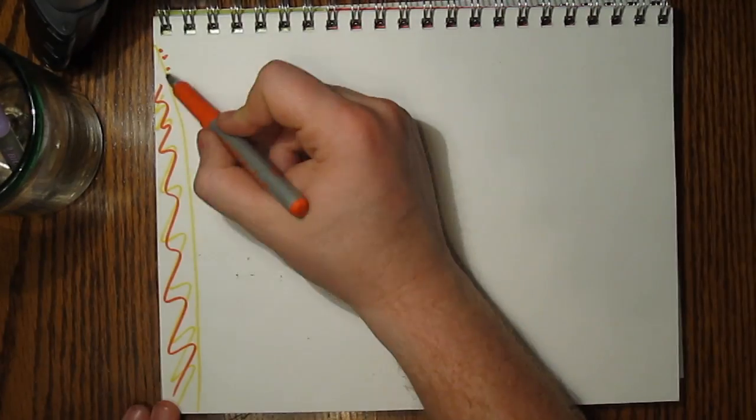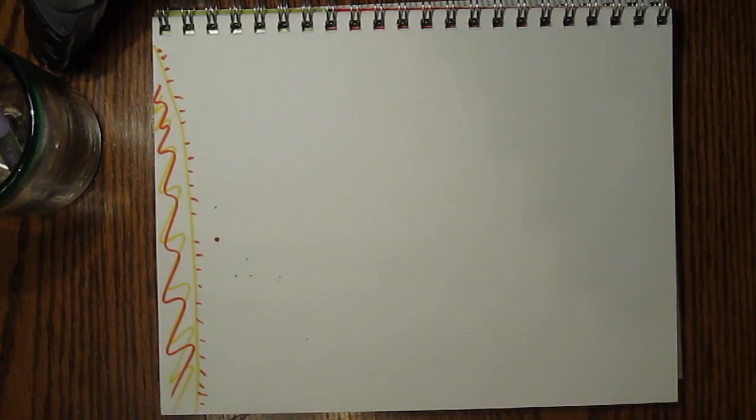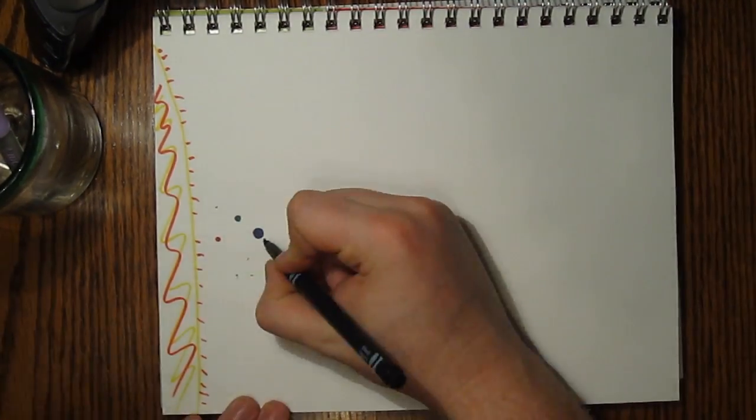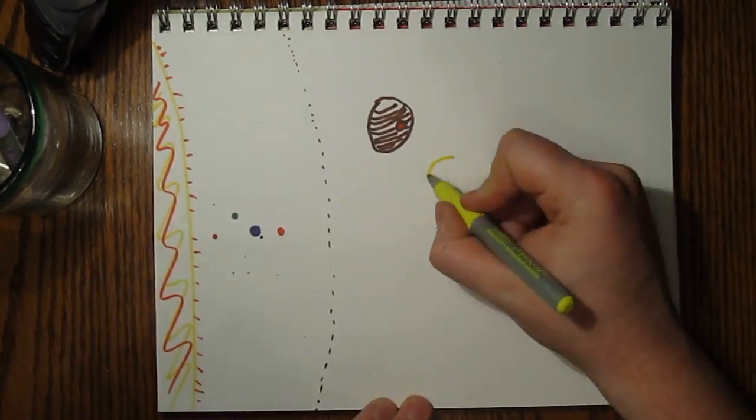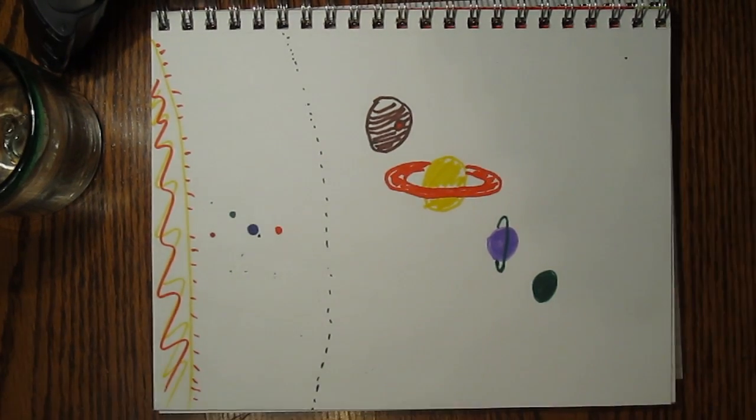I really got to know our solar system. Here's the Sun, Mercury, Venus, Earth, Mars, the asteroid belt, Jupiter, Saturn, Uranus, Neptune, and Pluto.